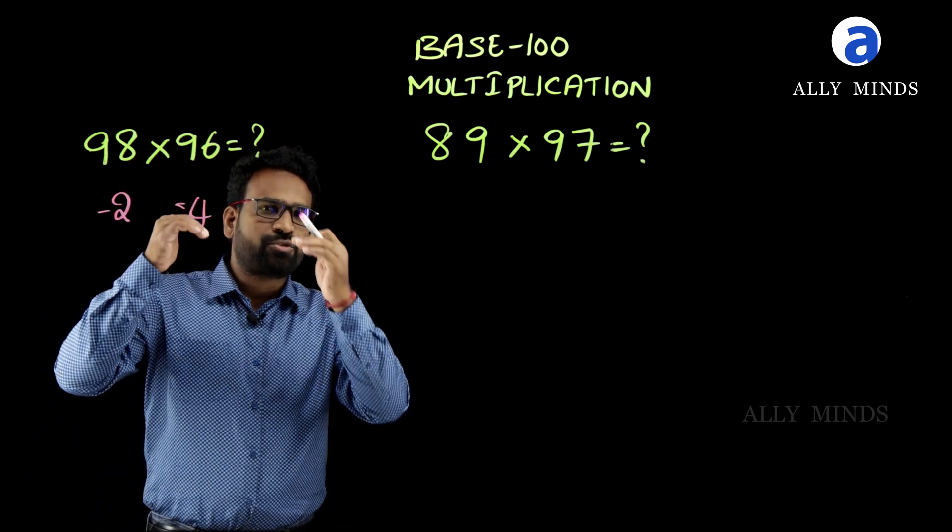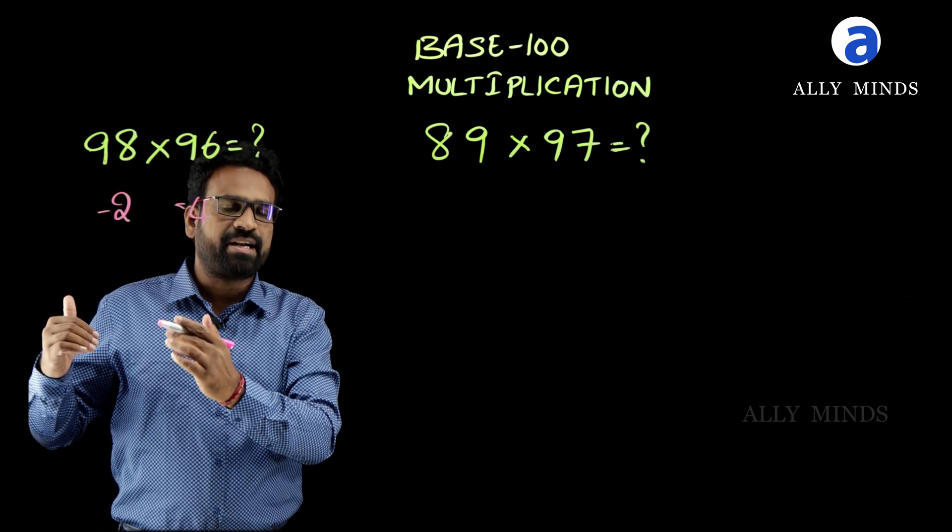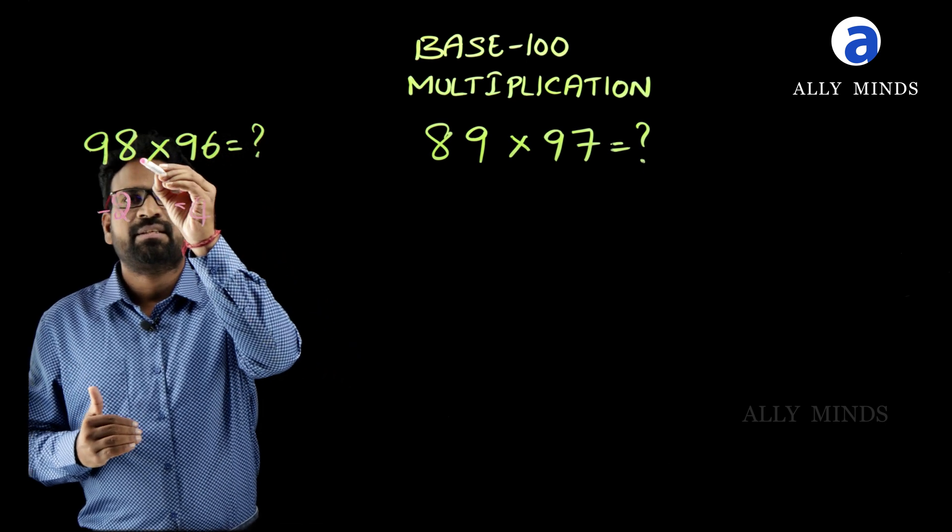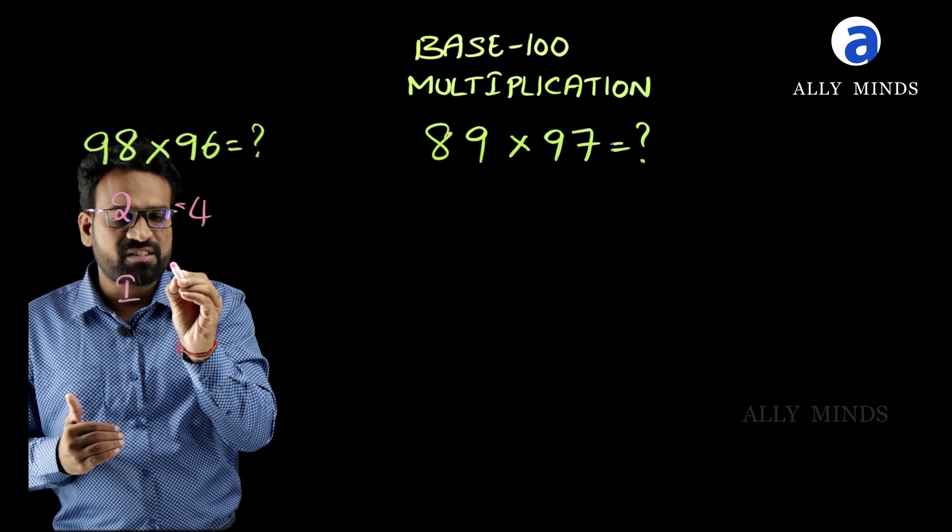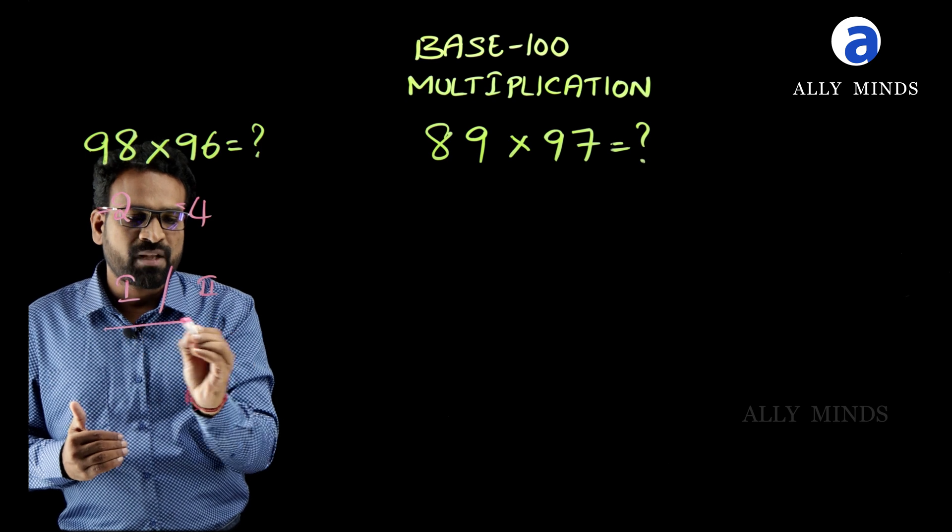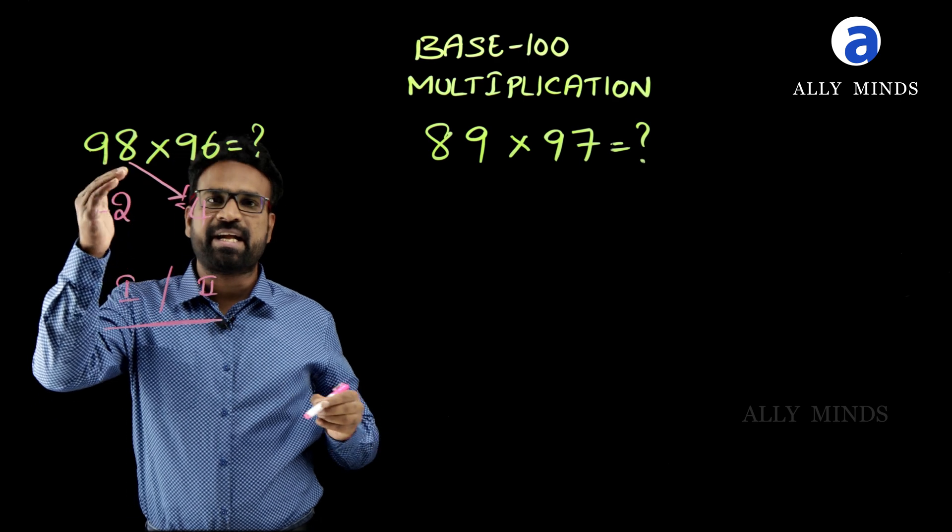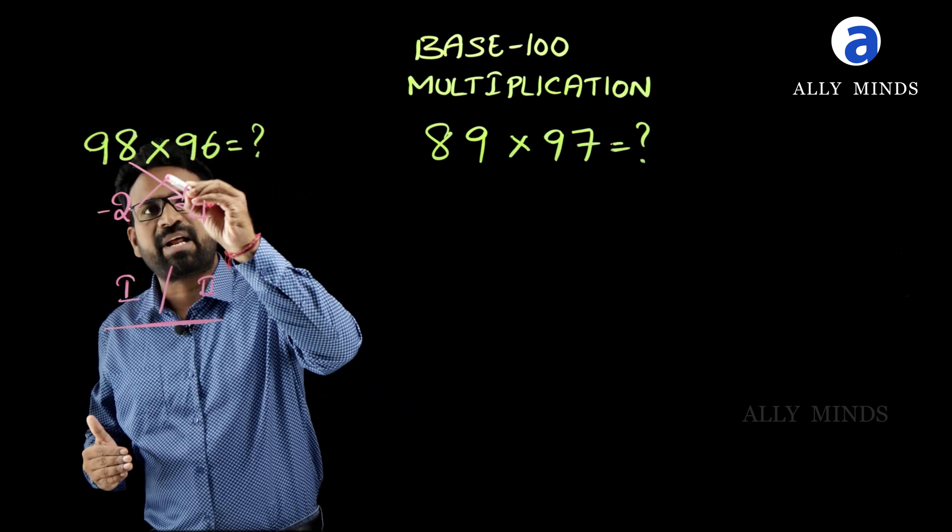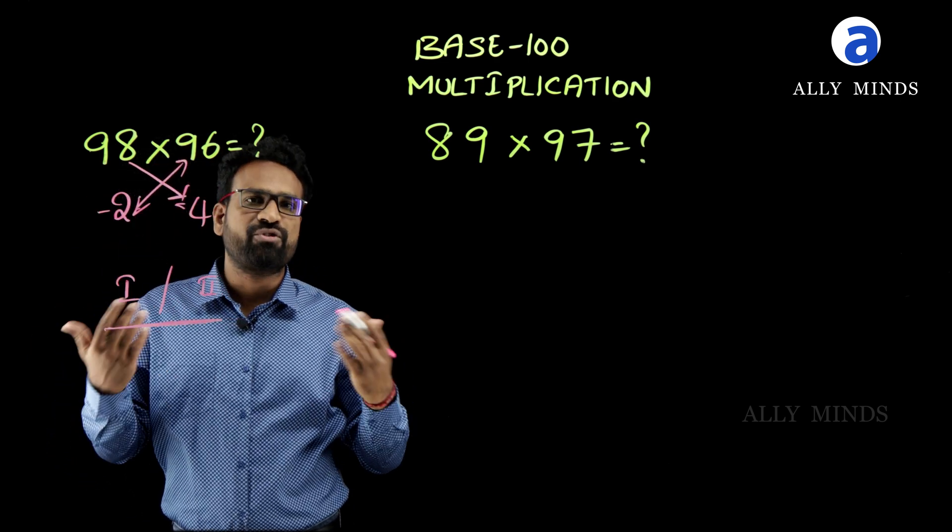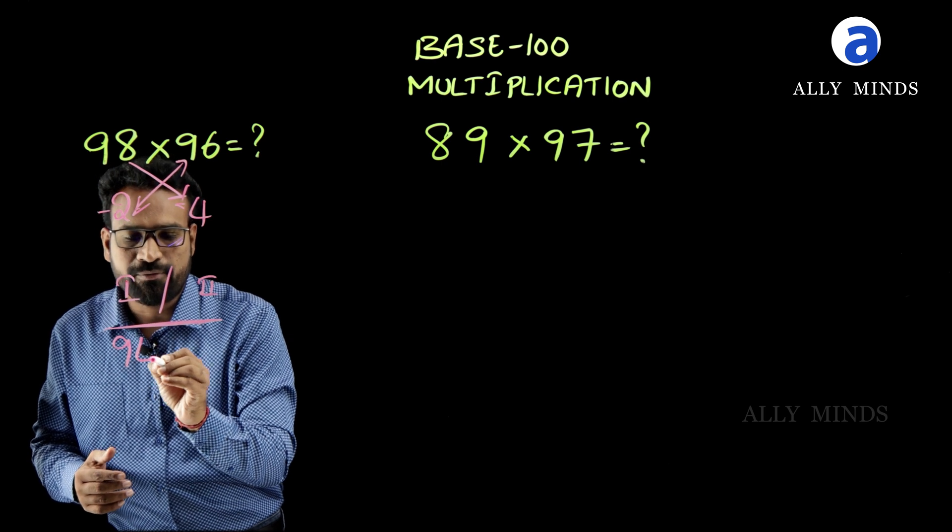As these two numbers are less than base 100, we have to do cross subtraction. We get this answer in two parts: first part and second part. For the first part, we apply cross subtraction of 98 and 4, or cross subtraction of 96 and 2, which will give the same result of 94.